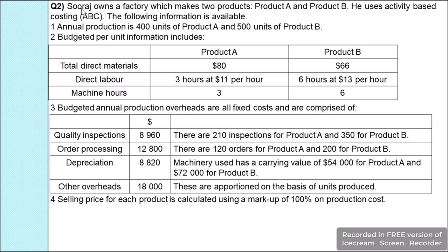The question states that Souraj owns a factory which makes two products: product A and product B. He uses activity based costing, ABC. The following information is available.